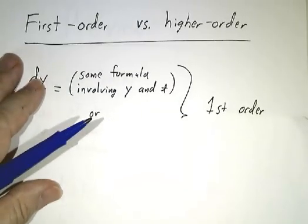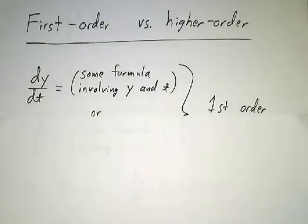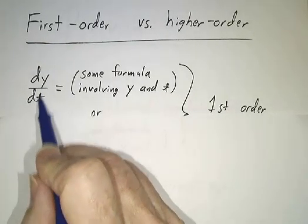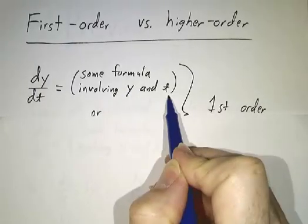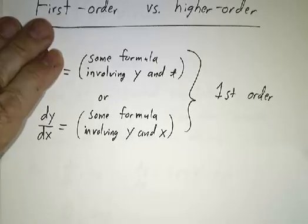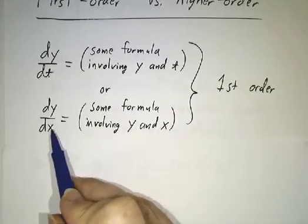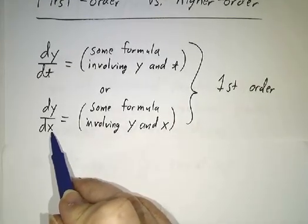Now, the simplest kind of differential equations are what are called first order differential equations, where you figure out that the rate at which y is changing is some formula that you get involving how much you already have and the time.